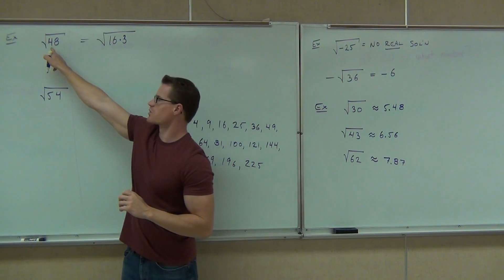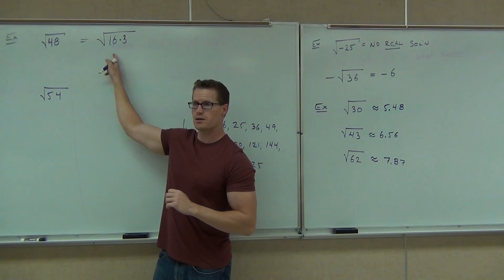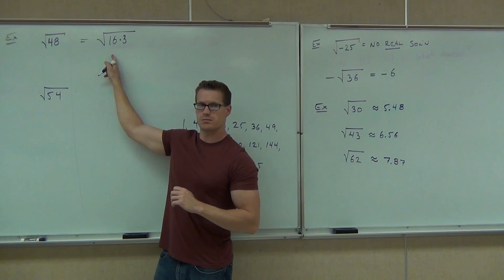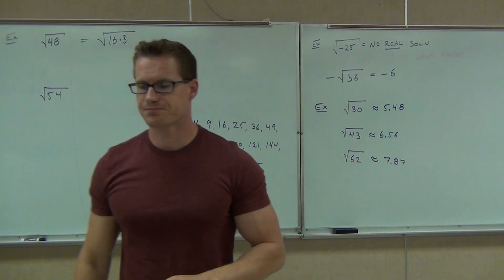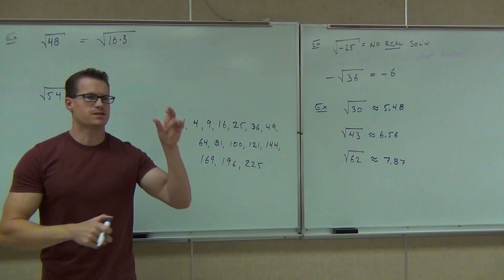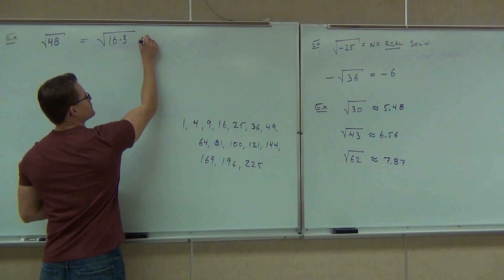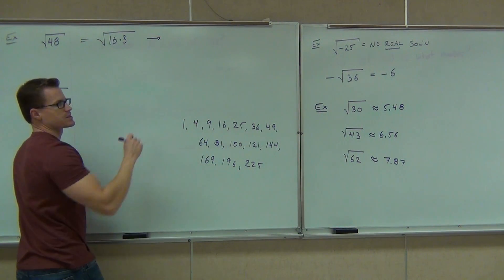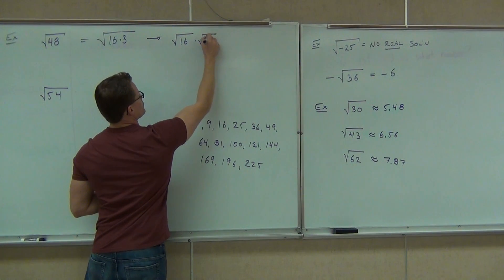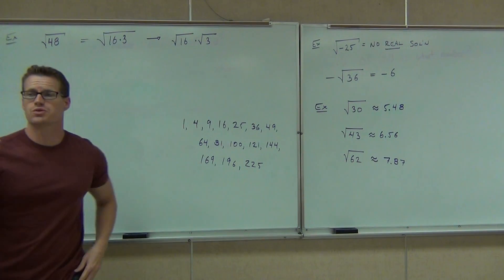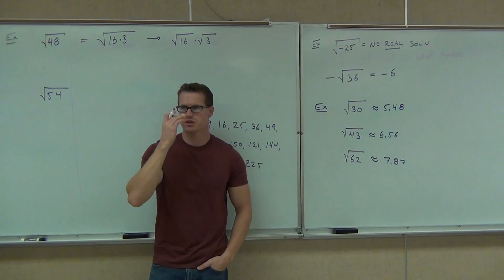Are these two things the same, the square root of 48 and the square root of 16 times 3? Is this still equal to 48? Yeah. Here's the power of these square roots. Whenever you've written this as something times something else as a product, you can now split this up. This is the same thing as the square root of 16 times the square root of 3. That's called the product rule for radicals.